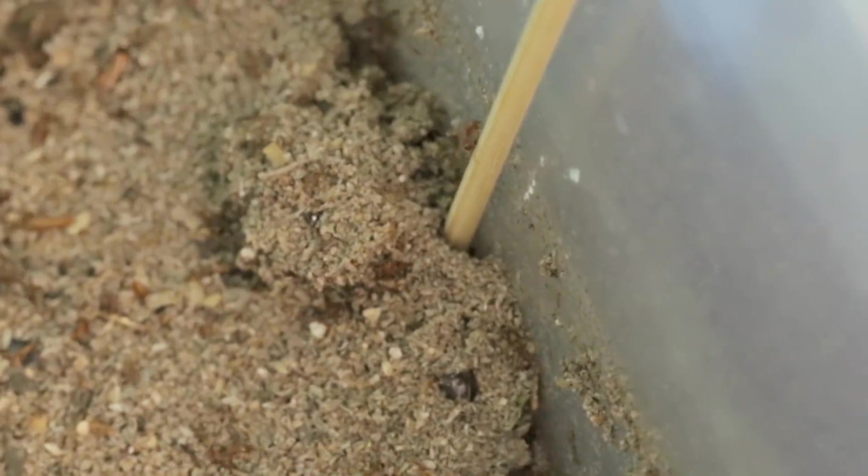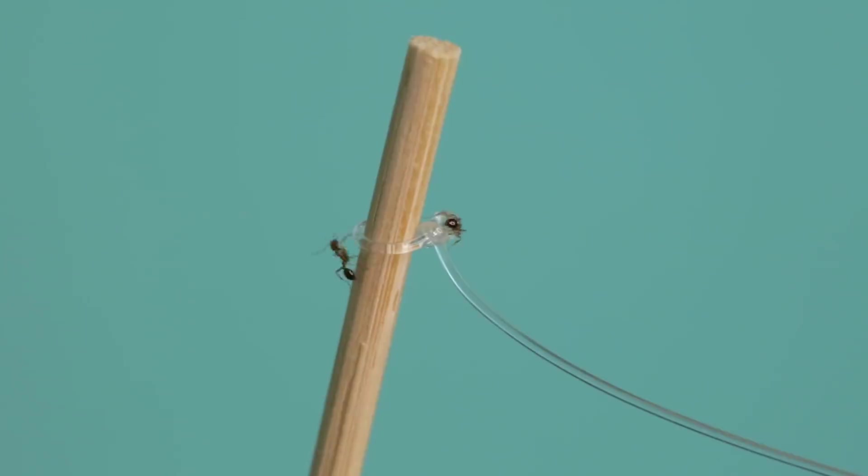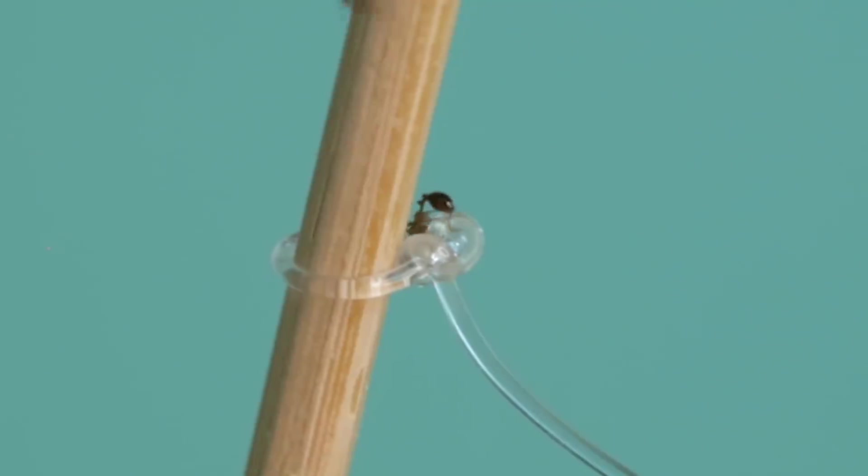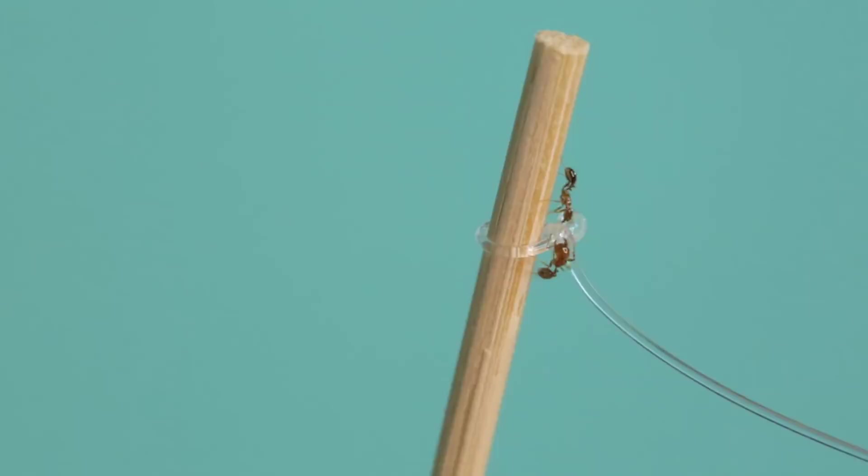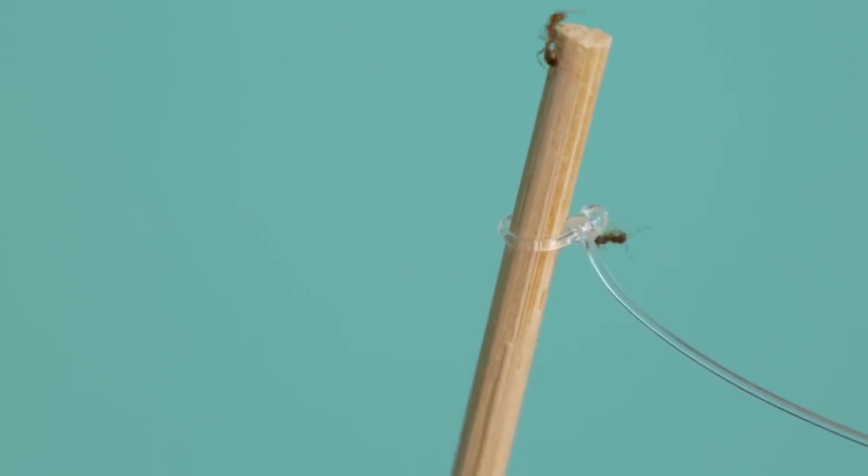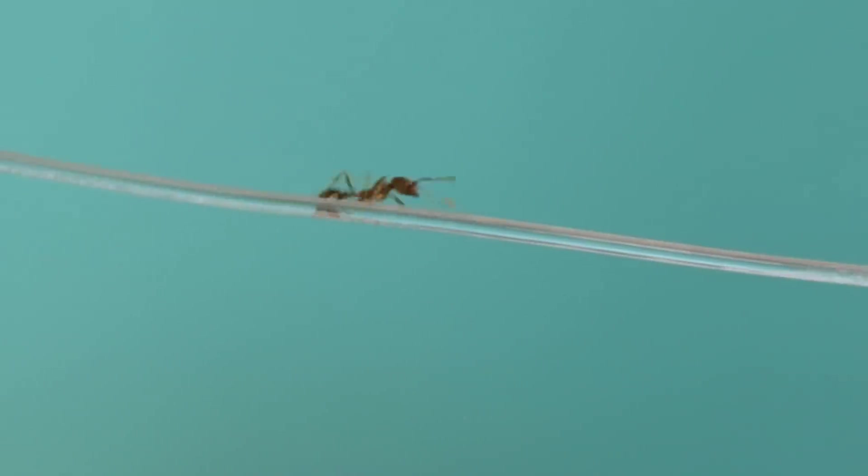It isn't long before the ants start to make the climb. At first, they simply want to check out the stick. Some ants seem to be much more interested in the nylon wire knot, but inevitably, it wasn't long until one brave ant started to walk the line.